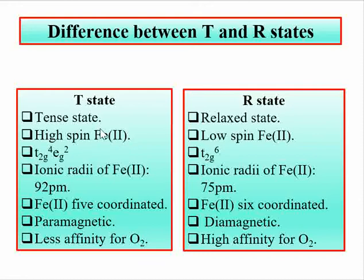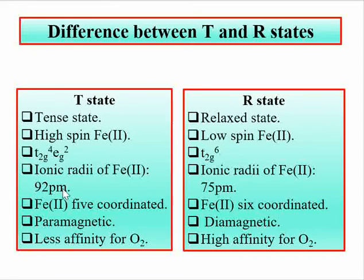In the R state, the Fe center is low spin, and due to low spin its configuration is t2g6. In the T state, the configuration of the Fe2+ center is t2g4 eg2, and due to the presence of electrons in the eg set, its radius becomes larger. The radius of the iron center in the deoxy or T state is 92 picometers, and the iron center is above the plane of the porphyrin ring by 42 picometers. In this case, iron is 5-coordinated.